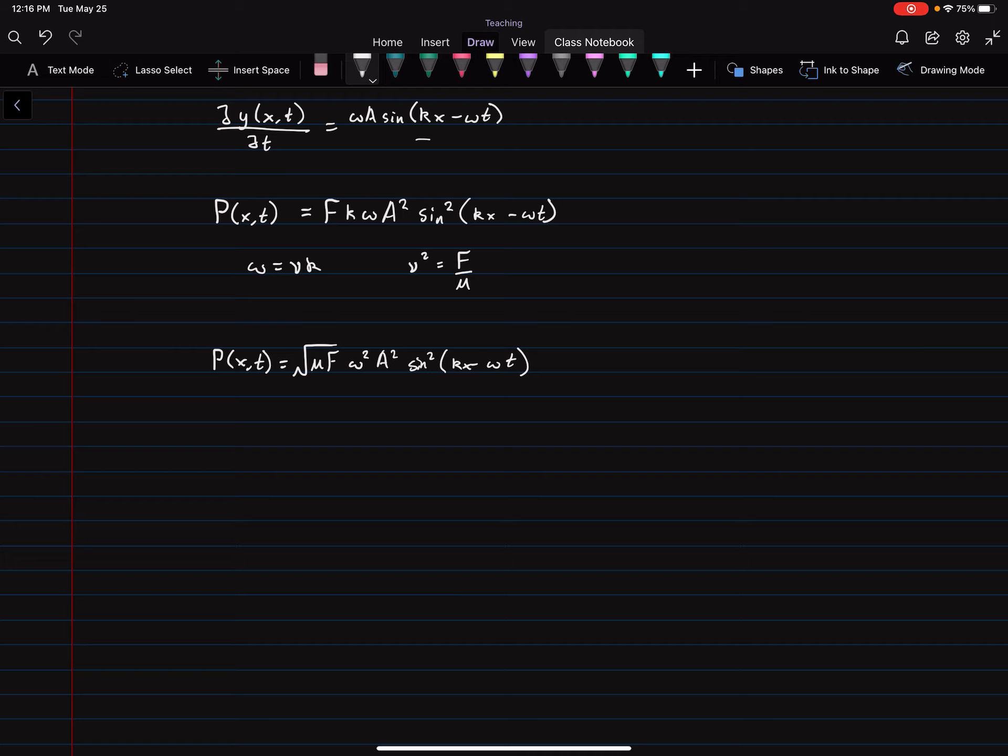So, let's pause here and look at this real quick. So, the maximum energy transfer occurs when the sine squared term is equal to 1 because sine squared is never going to be more than 1. At most, it's going to be 1. And so, P X T max must be mu F omega squared A squared. So, that's the maximum power in a wave. Maximum energy propagation.